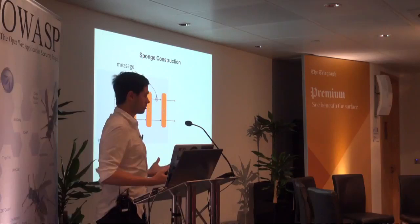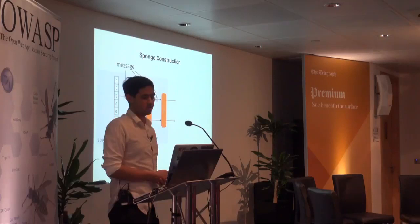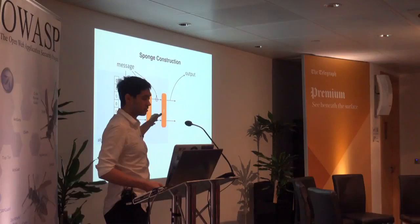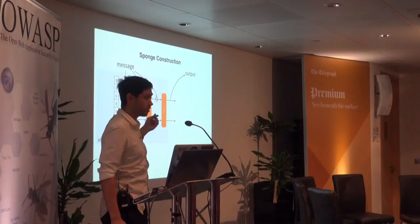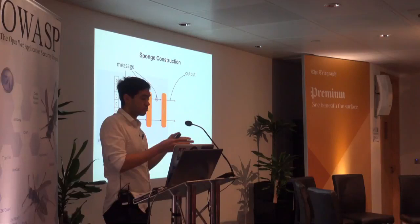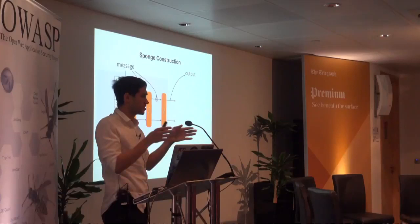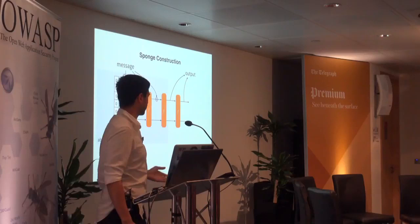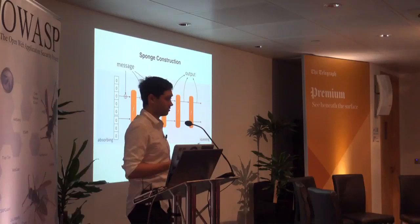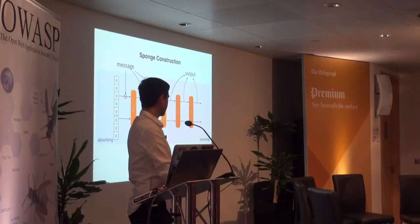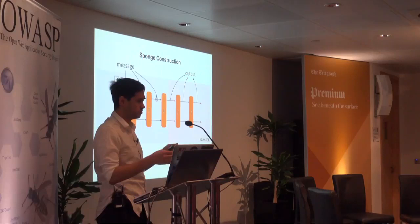How do we get an output? We just read the public part — that's why it's called public — and never touch the secret part, otherwise you have security issues. If the public part isn't enough for your desired output size — SHA-3 comes in 256-bit and 512-bit variants — you permute and continue reading the public part, appending it to what you had previously. If it's too much, you truncate. That part is called squeezing. It's a sponge: you absorb your message and you squeeze out your hash.